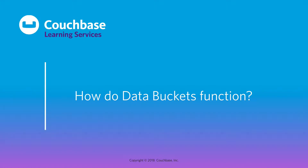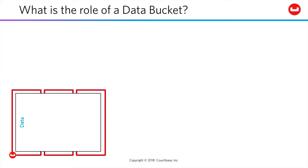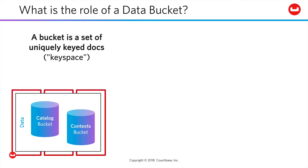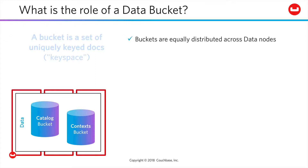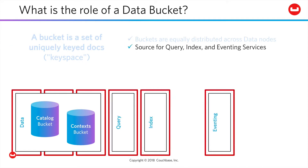As you're beginning to see, the data service is the heart of Couchbase Server. Let's dig a bit further into how these artifacts, known as data buckets, work. The data service exists to manage data buckets. Each data bucket is a single logical set of uniquely keyed documents — a key space — which is spread and replicated across however many nodes you need. These buckets are the source of data for your query, index, and eventing services.